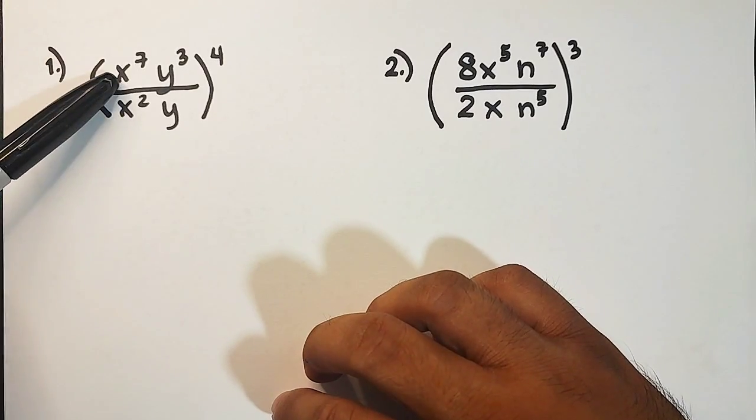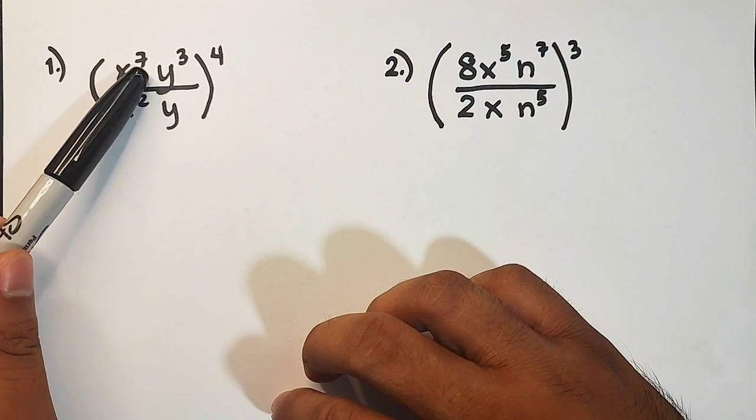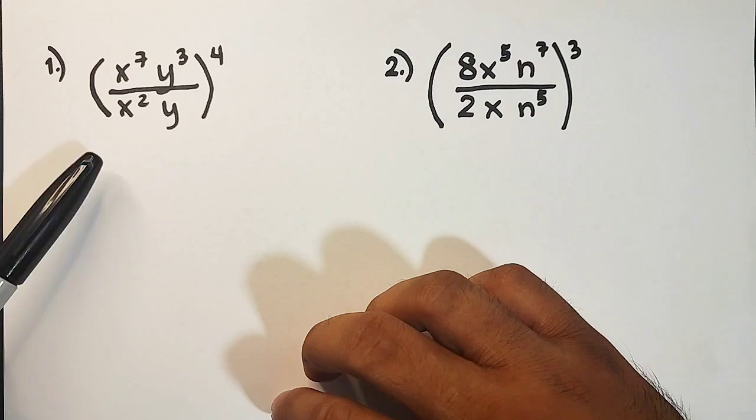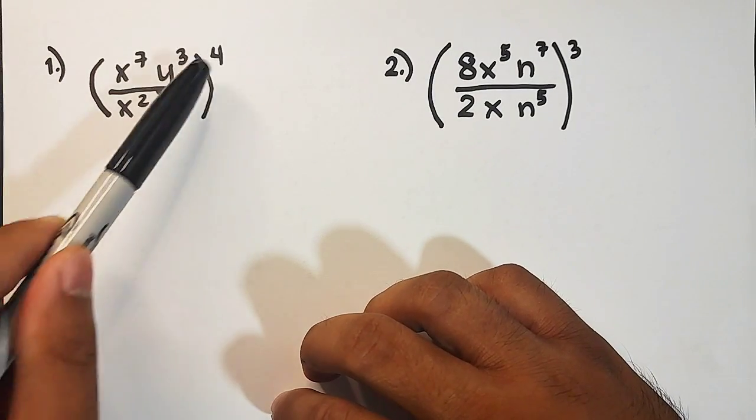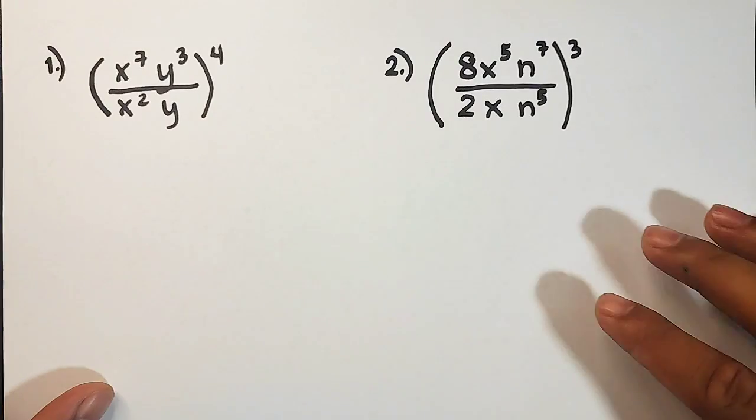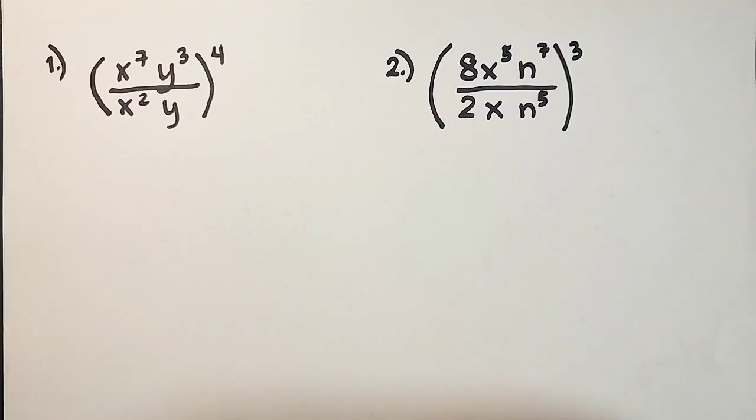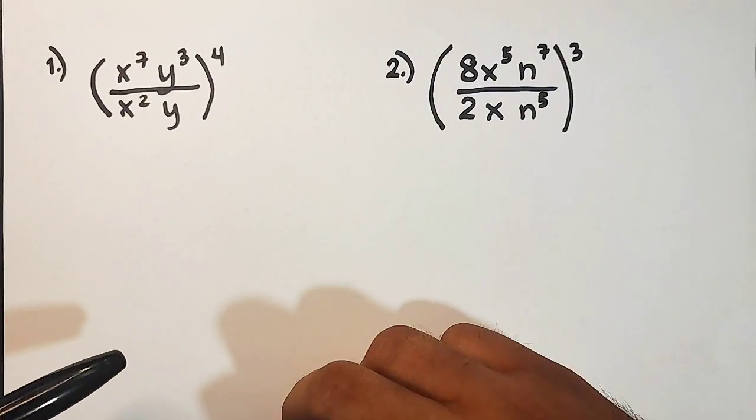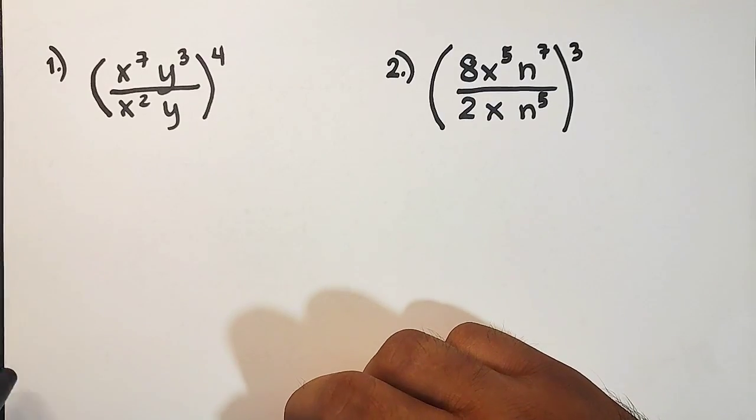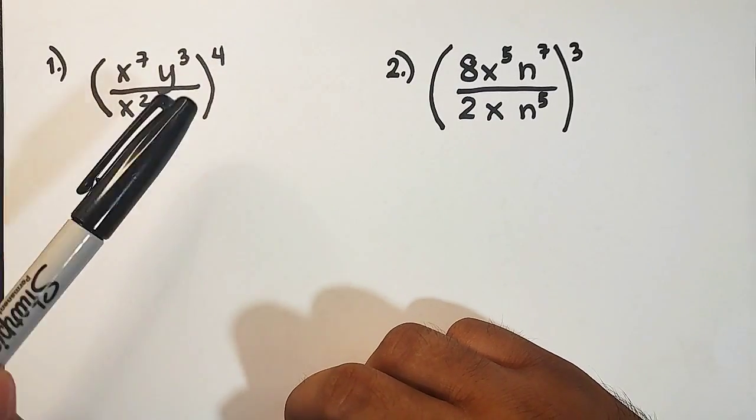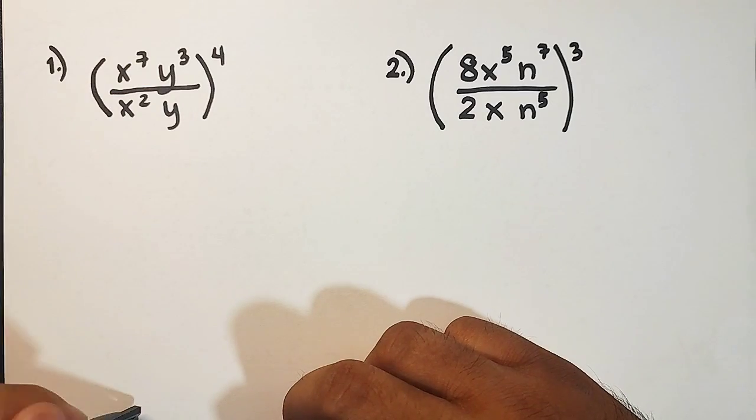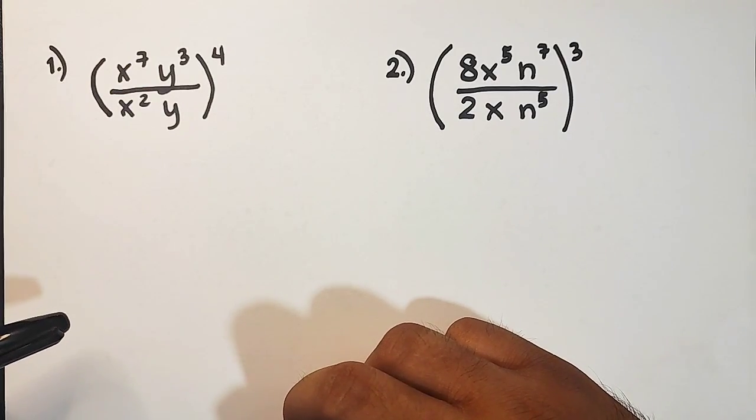We have x raised to 3, y raised to 3 over x squared y raised to the power of 4. Many of the students will see this as a difficult problem but this one is quite easy. What makes this difficult I think are the exponents and the exponents of variables. So let's start with item number 1.